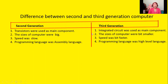Once again, the differences between second and third generation computers: transistors were used as the main component in second generation. The size was big in second generation and a bit smaller in third generation. Speed was slow in second generation and a bit faster in third generation. Programming language was assembly language in second generation and high-level programming language in third generation.